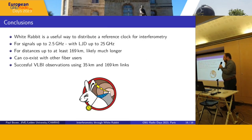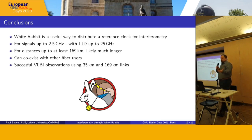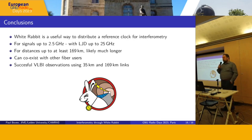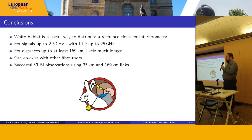In conclusion, White Rabbit is a useful way to distribute a reference clock for interferometry. It's usable off the shelf for 2.5 GHz signals, and with a low-jitter daughterboard up to 25 GHz. We've proven it works for at least 170 km and think it can go much longer. It can coexist with other users on the same fiber, making network buildout cheaper. We've successfully shown VLBI observations over 35 and 170 km links. The White Rabbit logo shows a little hare running through an accelerator tunnel at CERN — can't be late, like in the Lewis Carroll book.